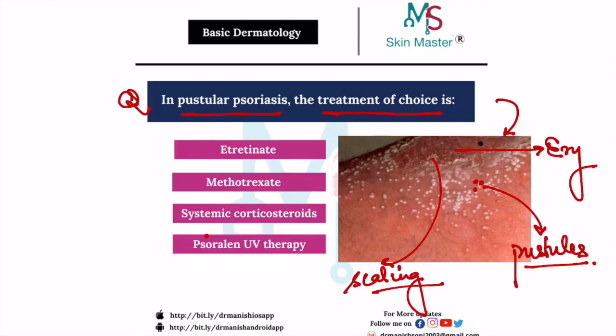Retinoids are generally used in the treatment, and one of the retinoids mentioned here is etretinate. So etretinate is the answer here. But remember that etretinate is a teratogenic drug, and sometimes they ask what is the drug of choice for pustular psoriasis in pregnancy.